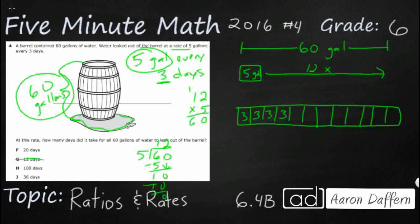So that's the trick, it's a 2-step problem. First, I need to divide my 60 into 12 sets of 5, but then I need to realize, for every 5 gallons, it takes 3 days. So that's going to be 12 groups of 3, or 3 plus 3 plus 3 plus 3, repeat addition wherever you want, and that's going to equal 36 days. So that's going to be my answer right here.